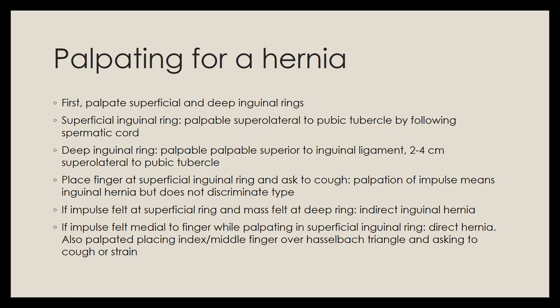To palpate for a hernia, first identify the superficial and deep inguinal rings. The superficial inguinal ring is palpable superolateral to the pubic tubercle by following the spermatic cord. The deep inguinal ring is palpable superior to the inguinal ligament, around 2 to 4 cm superolateral to the pubic tubercle. Place your finger at the superficial inguinal ring and ask the patient to cough. If you can palpate an impulse, an inguinal hernia is present.